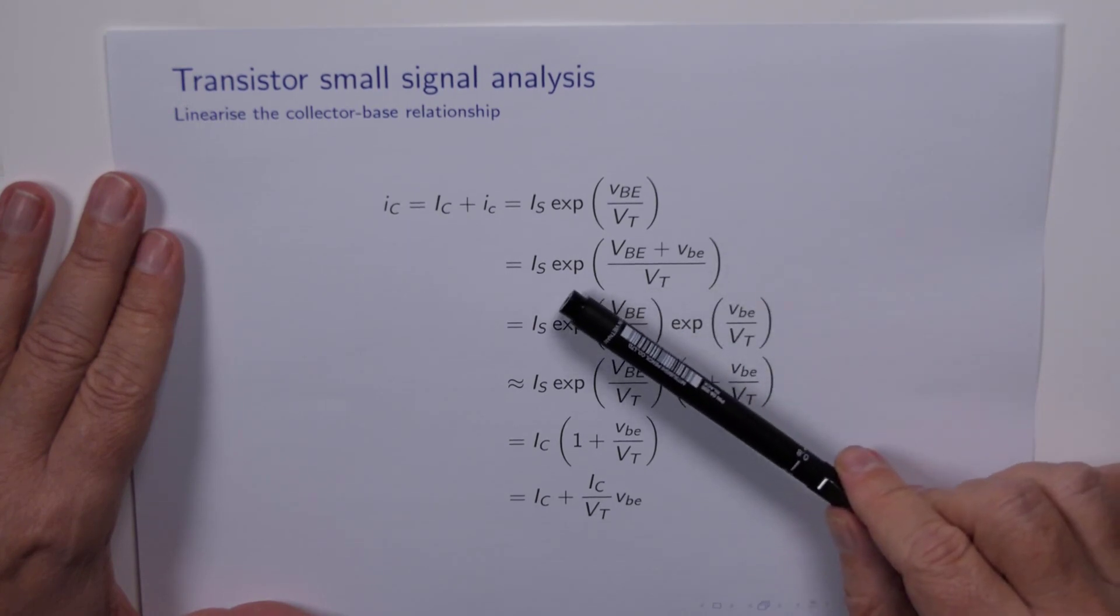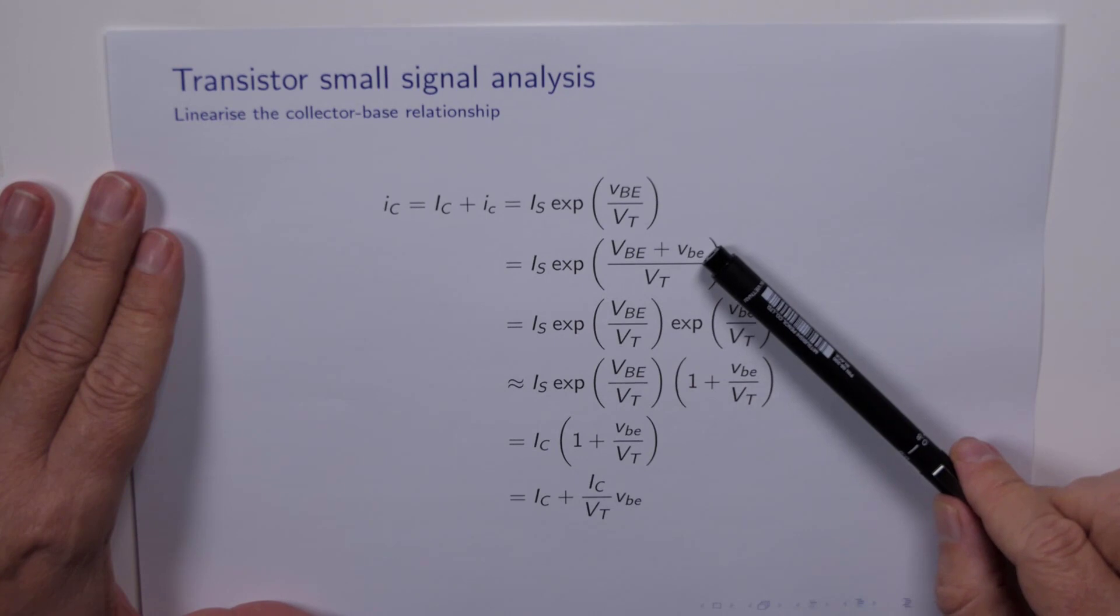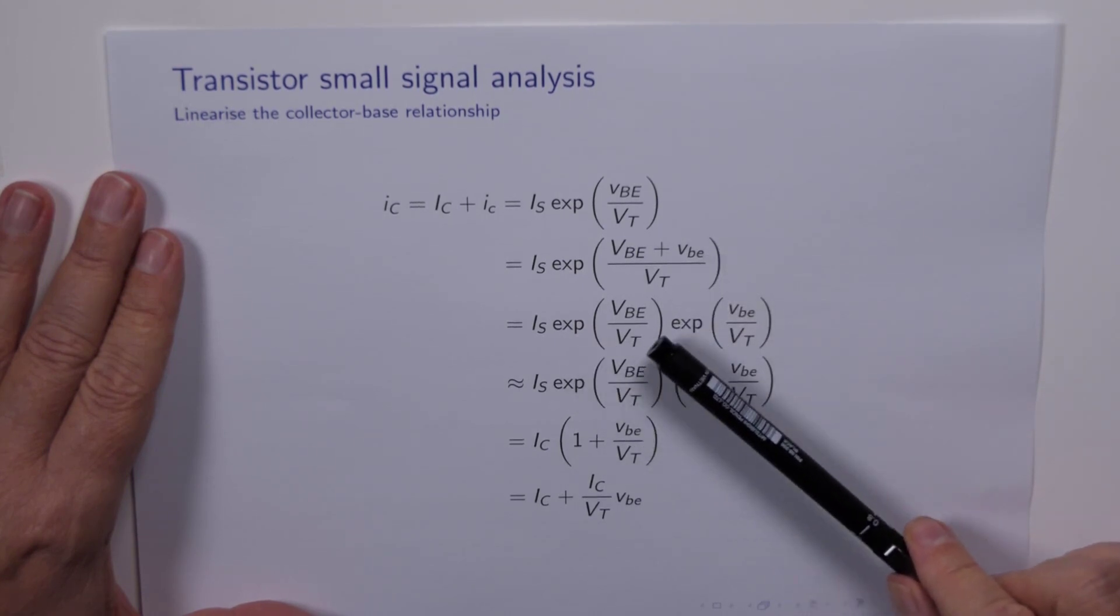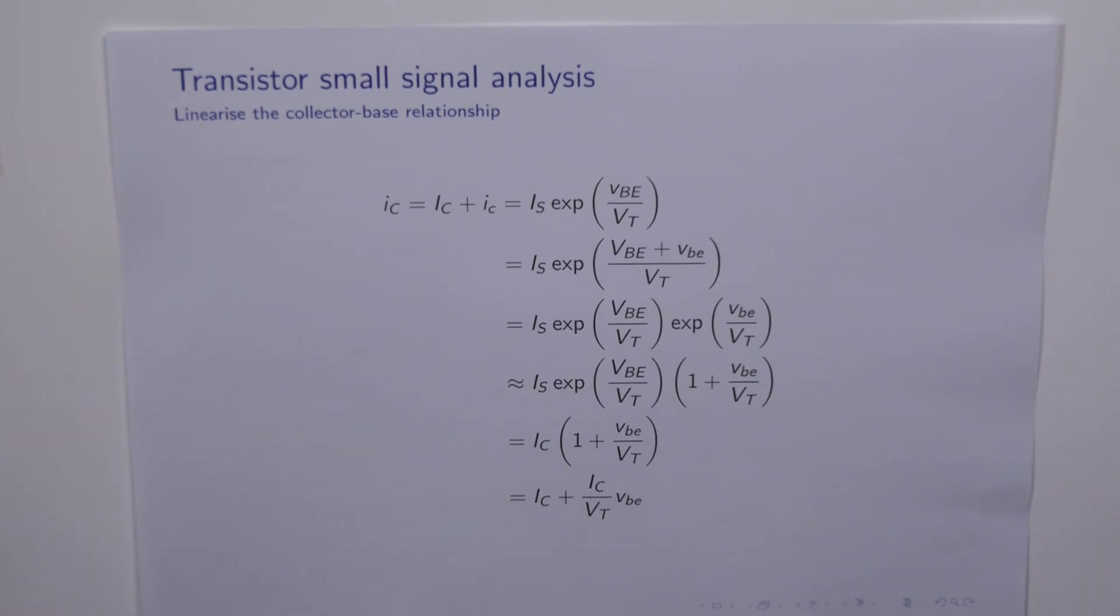So we just use the result that the exponential of a sum is equal to a product of the exponentials to split that out like this.